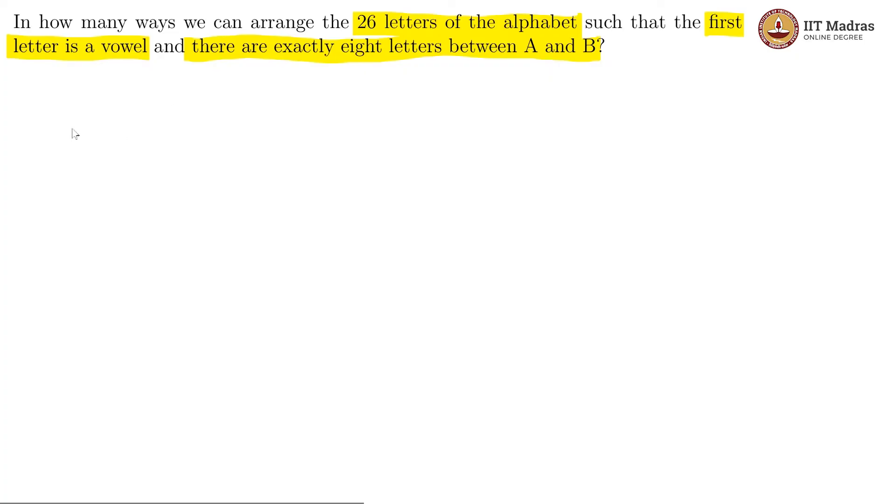This is the first box and then we have the rest, and this can be filled in 5 ways. But since we are looking at this condition here, let us start with filling it with A. Then B will be somewhere here in the 10th position. This is the first position and there are 8 letters in between.